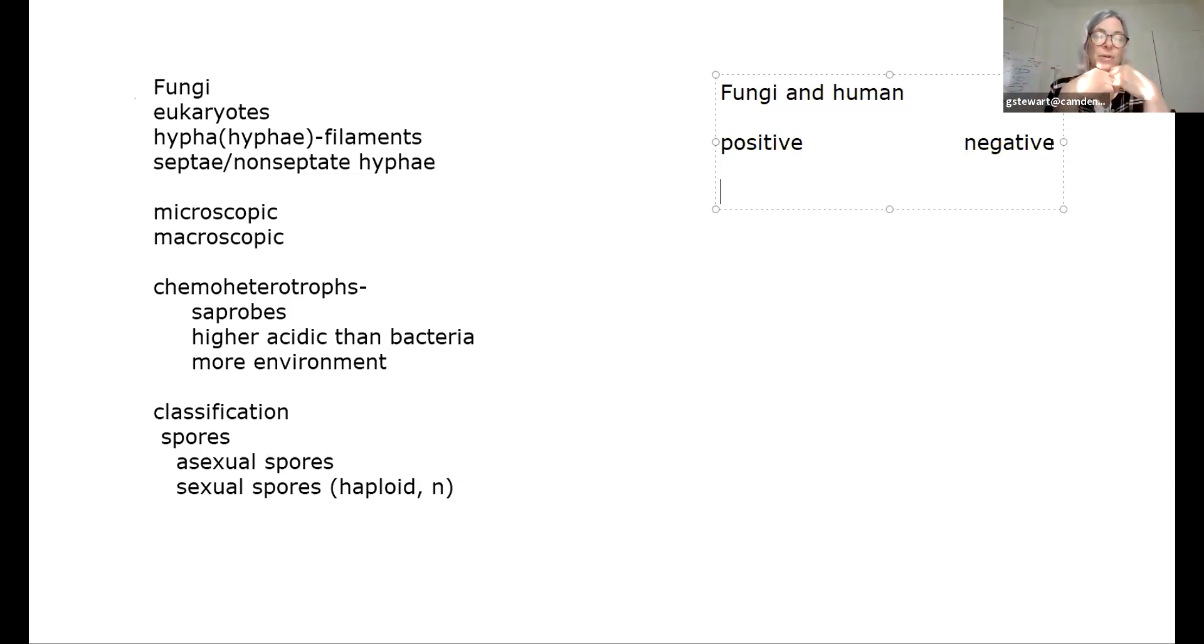And on the negative side, of course, they can cause disease, they can cause damage to crops, as well as they can deteriorate things that we want to preserve. And they can also produce toxins, and those toxins are pretty strong, and some of them are fatal. So I would fill out that list, there's a couple paragraphs you can read about in the book that would help you with that.